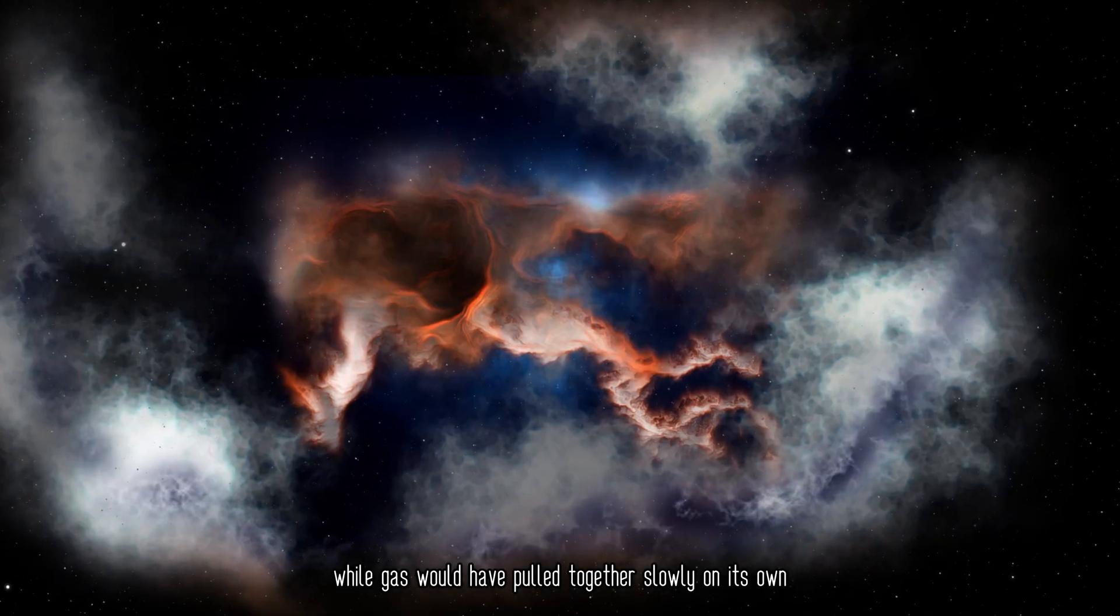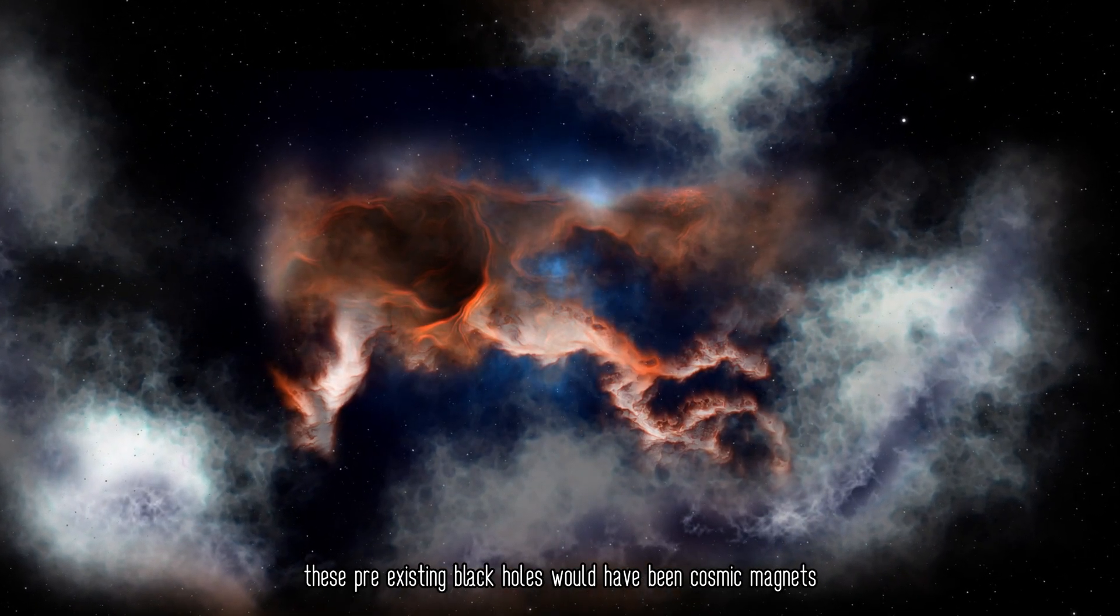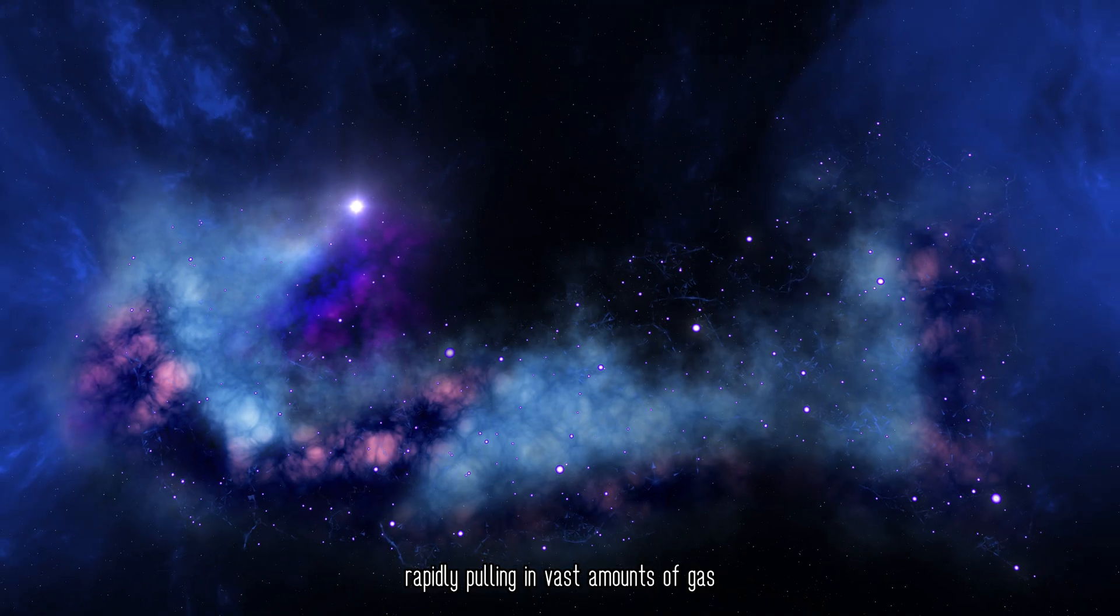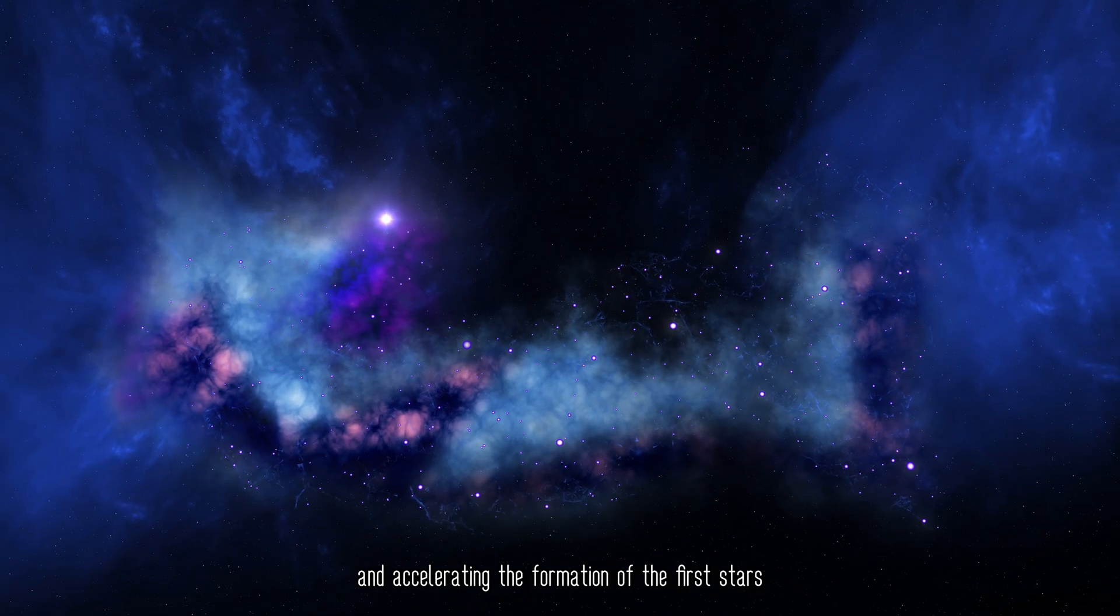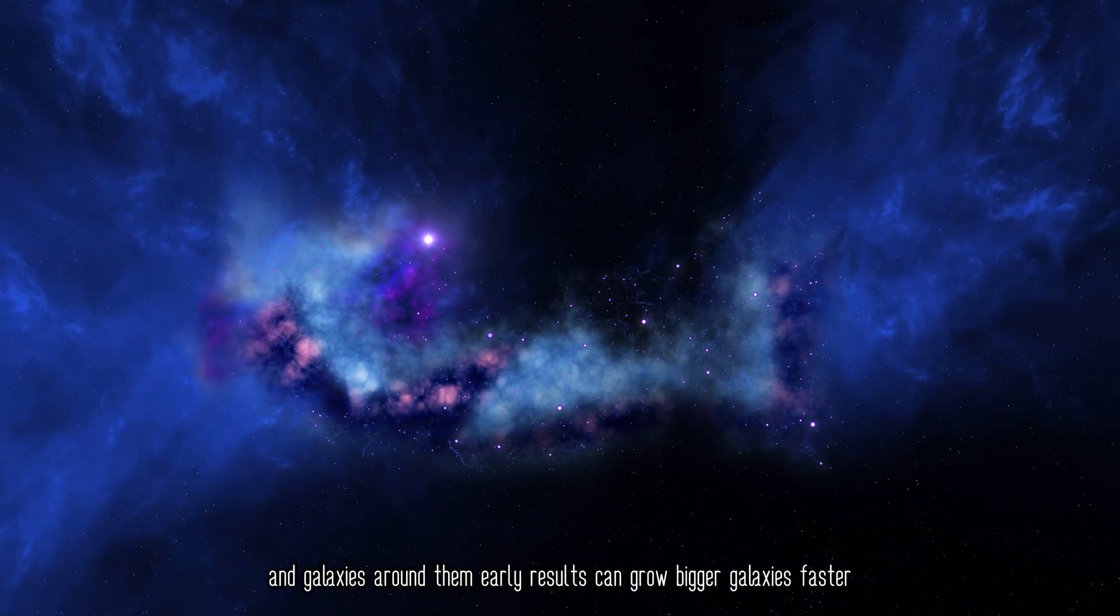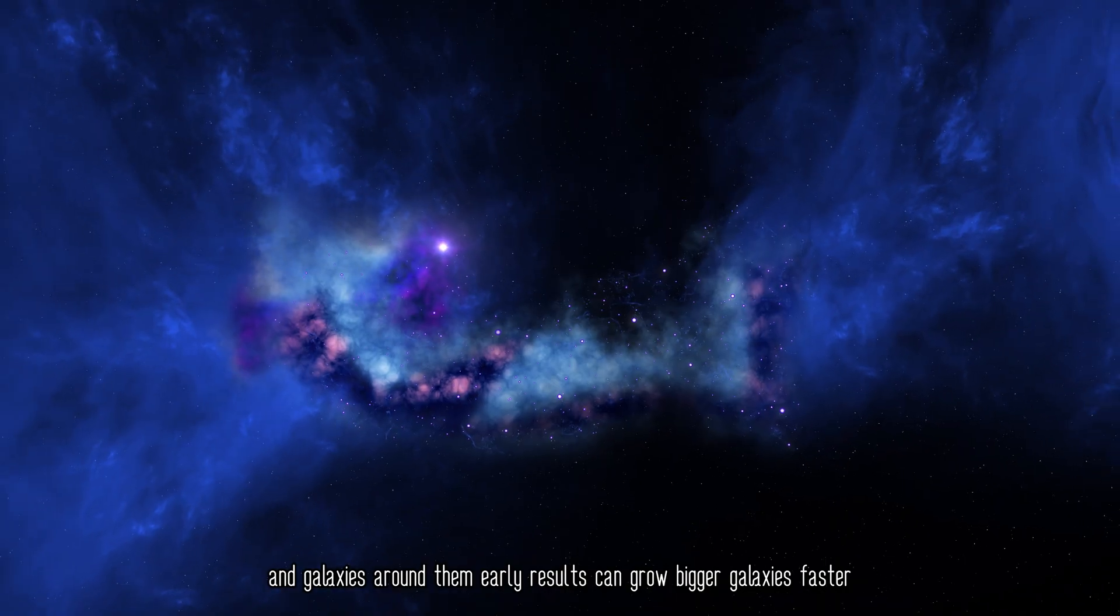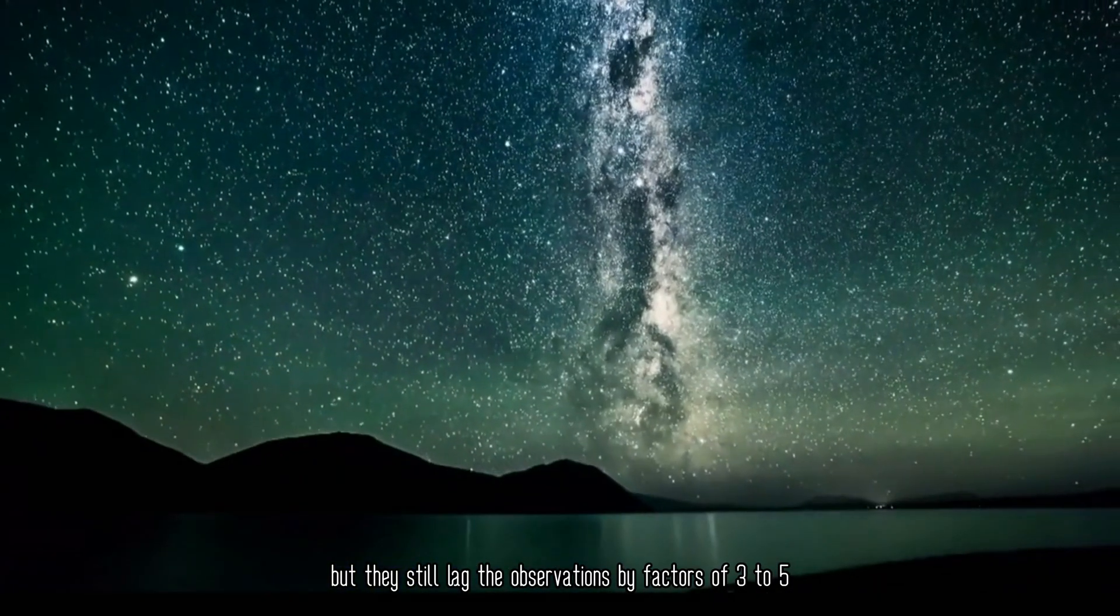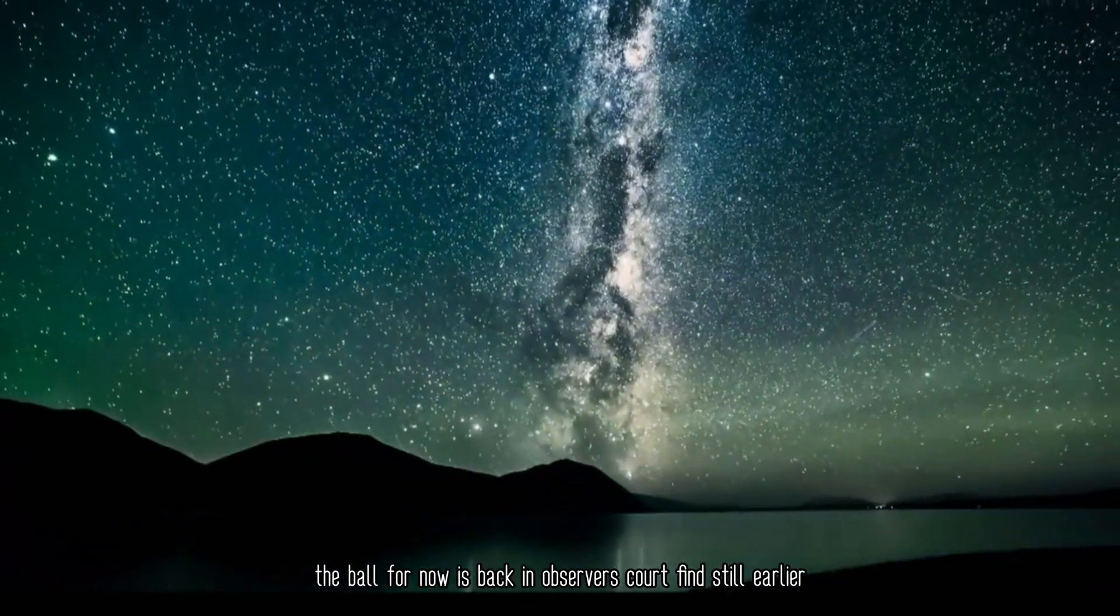While gas would have pulled together slowly on its own, these pre-existing black holes would have been cosmic magnets, rapidly pulling in vast amounts of gas and accelerating the formation of the first stars and galaxies around them. Early results can grow bigger galaxies faster, but they still lag the observations by factors of 3 to 5 in mass and metal content.